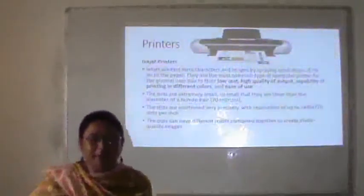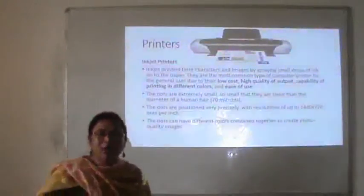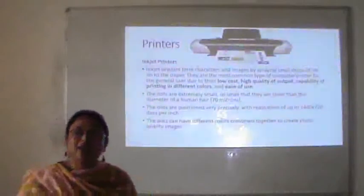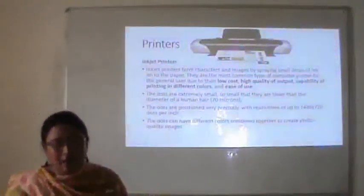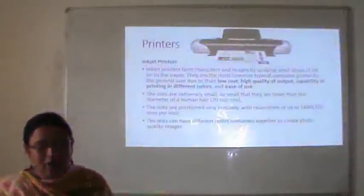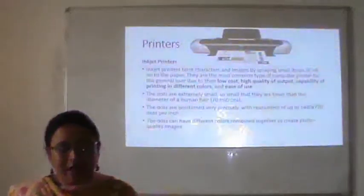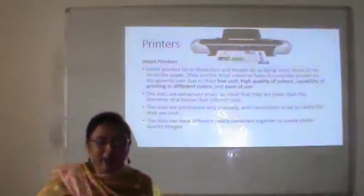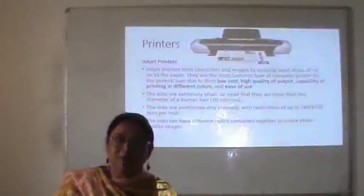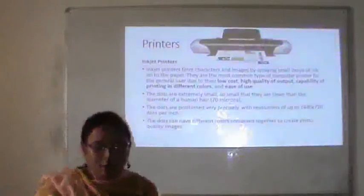The inkjet printer forms characters and images by spraying small drops of ink onto the paper — unlike the dot matrix printer which strikes the paper. Inkjet printers are the most common type of computer printer for general users due to their low cost, high quality of output, capability of printing in different colors, and ease of use. The dots are extremely small — tinier than the diameter of a human hair — and are positioned very precisely with resolutions of up to 1440 by 720 dots per inch (DPI). The dots can have different colors combined together to create photo-quality images.